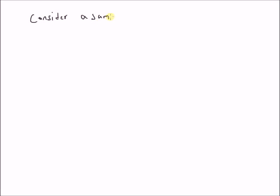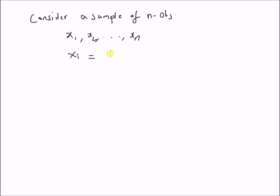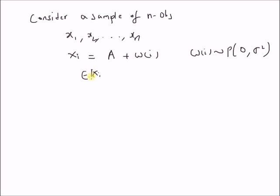Consider an example where we have a sample of n observations, x1, x2 up to xn. The model for the observation is xi = a + w(i), where w(i) is the random component. w(i) has a probability distribution with mean 0 and variance σ². As a consequence, the expectation of xi equals a and the variance of xi equals σ².